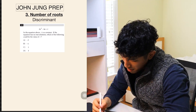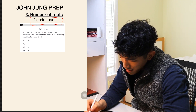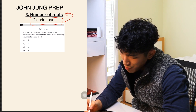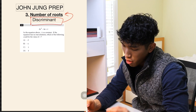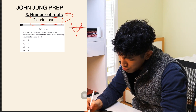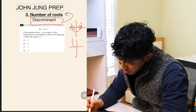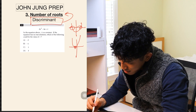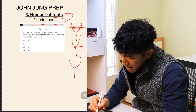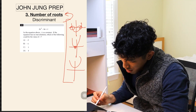Now for discriminants. What the discriminant tells us is the number of roots. Based on the discriminant value, we can tell whether there are two roots (graph crosses x-axis twice), one root (graph just touches the x-axis), or no roots at all.